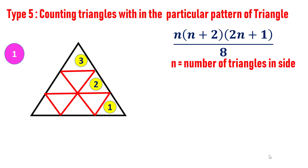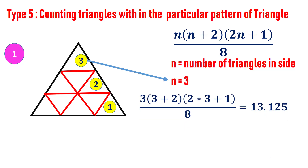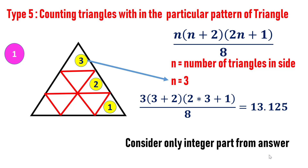In the first example, the number of side triangles is three, so n equals three. Substituting into the formula: three into three plus two into two into three plus one, divided by eight, which equals 13.125. So the number of triangles is 13. Note: consider only the integer part from the answer — for example if the answer is 13.12, take only 13. Do not round off the number.